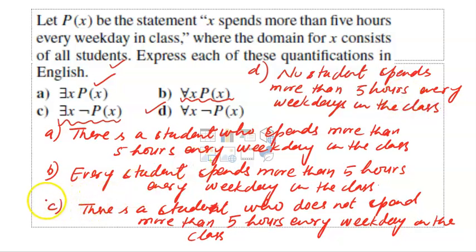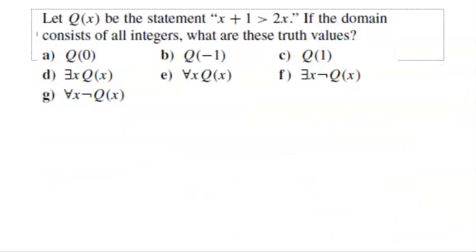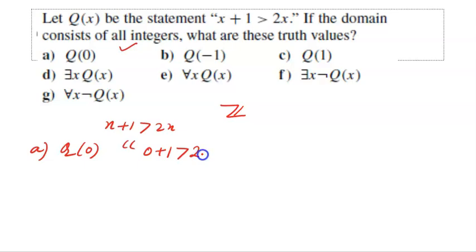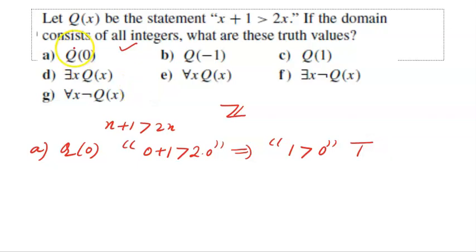Please pause the video, rewatch if needed. Now let Q(x) be the statement 'x + 1 > 2x,' where the domain contains all integers (represented by Z). For Q(0): 0 + 1 > 2×0, which gives 1 > 0 — this is true. So the truth value of Q(0) is true.